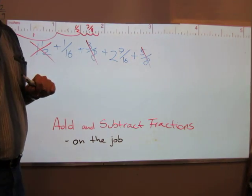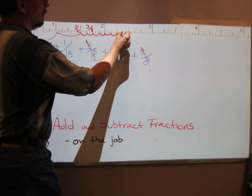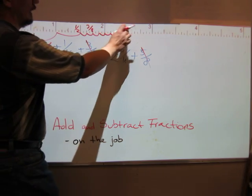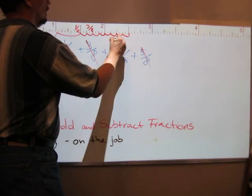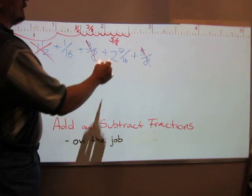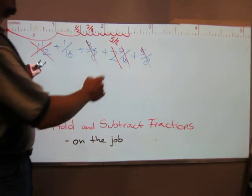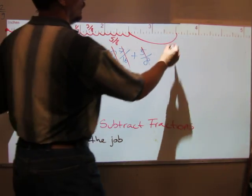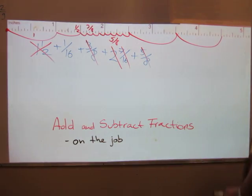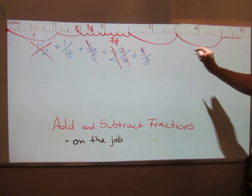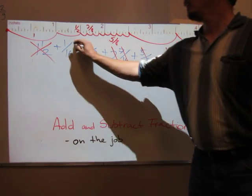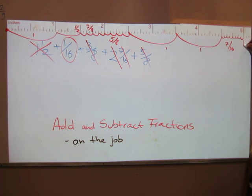Next, add 5 eighths: one eighth, two eighths, three eighths, four eighths, five eighths. We ended up on the two and a half inch mark — an easy line to keep your eye on. Now from there, add 2 and 7 sixteenths: one inch, two inches, then one, two, three, four, five, six, seven sixteenths. And finally, add one more sixteenth. Ta-da — we ended up at exactly 5 inches! All these fractions added in under fifteen seconds.